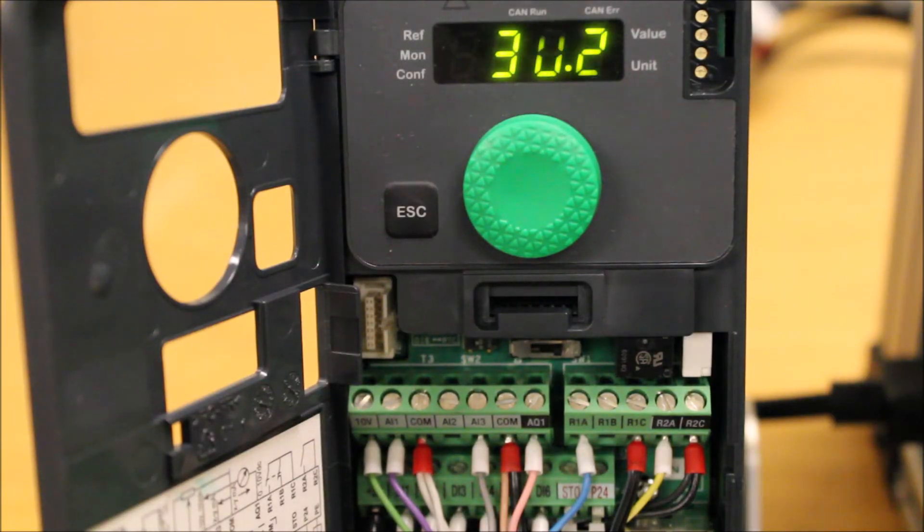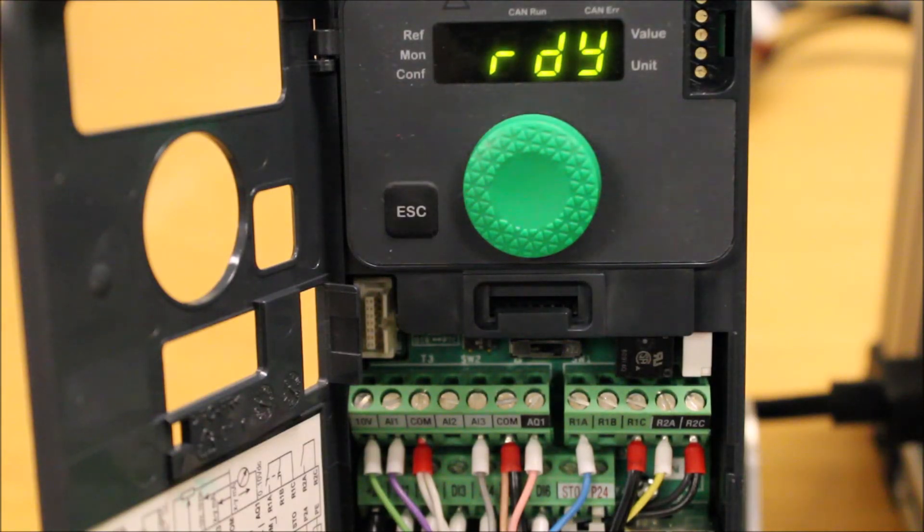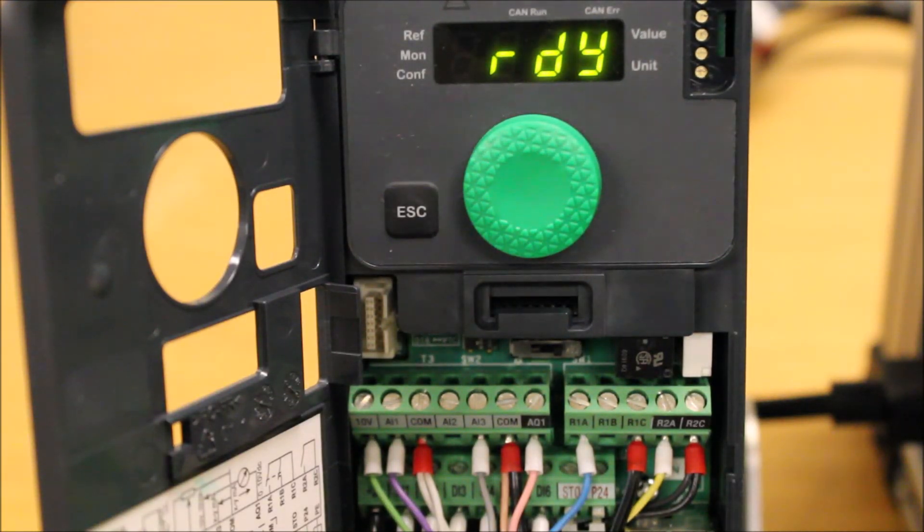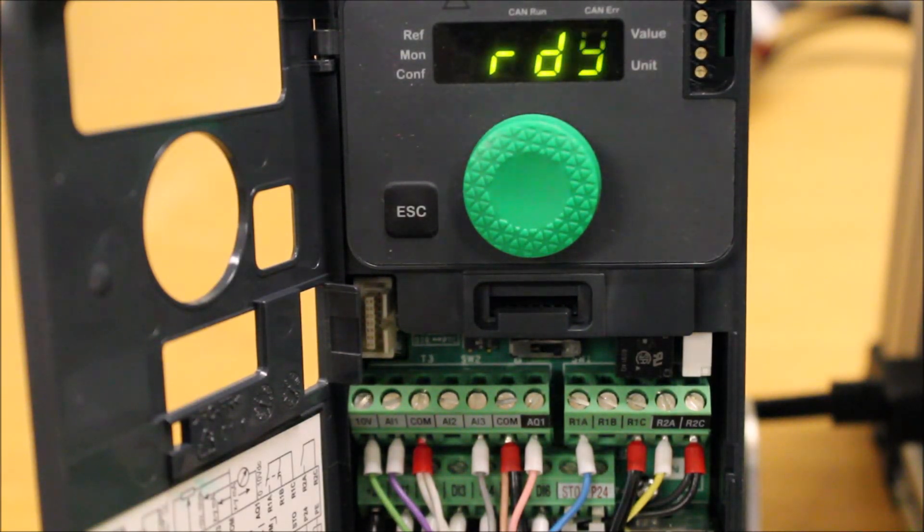That hopefully will help you determine how to program this particular function. Keep in mind that you can program the presets as network commanded functions as well, so you can assign a particular bit to be a preset. But this particular video only shows you the one where you assign a terminal, DI3 and DI4 as an example, for a preset speed functionality on the ATV320 drive.